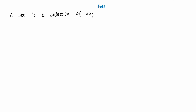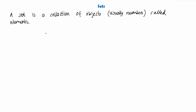Now, what is a set? Well, in mathematics, a set is a collection of objects, and these objects when we're talking about in maths are usually numbers, called elements. So we call the numbers in a set elements. Now sets can be anything — a set can be letters, it can be shapes — but in maths we usually refer to a set of numbers, and we'll go over a few examples of what a set looks like.